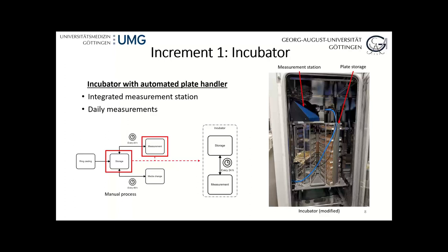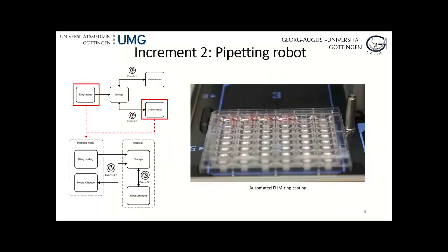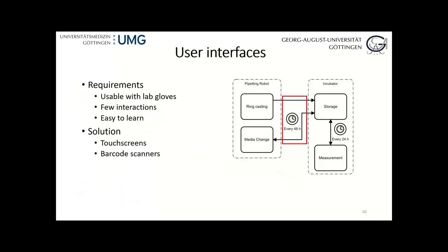We also have to do the pipetting — the casting and media change. For that we have a pipetting robot: you put a plate below the robot, place the liquid containers next to it, press a button, and it starts its program. When it's done you put the plate back in the incubator and at night it will be measured. We are currently working on this — it's not finished yet. The question then arises: how does the plate get from the incubator to the pipetting robot and back? The obvious answer is a robot arm, but we don't have one yet — maybe next summer.